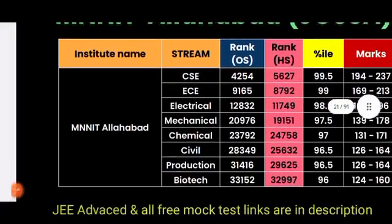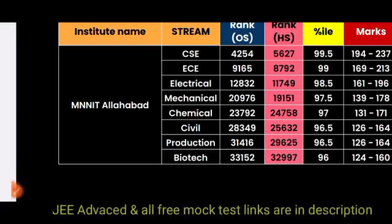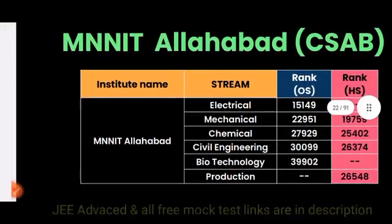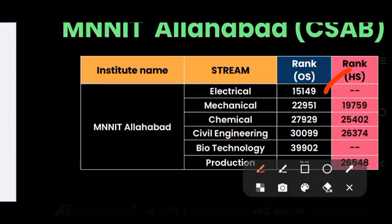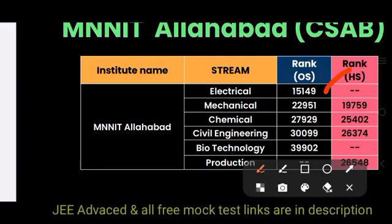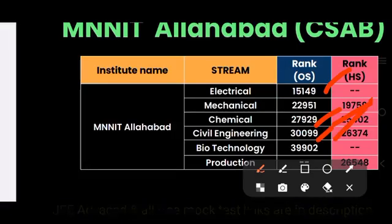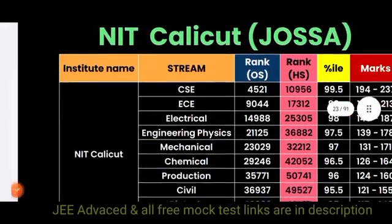For MNIT Allahabad, Production is 31,000 for other state and 29,000 for home state. Biotech is 33,000 for other state and 32,000 for home state. Through CSAB, Electrical is 15,149. Mechanical is 22,951 for other state and 19,759 for home state. Chemical is 27,929 for other state. Civil is 30,000 for other state and 26,000 for home state. Biotech is 39,000 for other state and Production is 26,000 for home state. Coming to NIT Calicut, Computer Science through JOSA is 4,521 for other state.